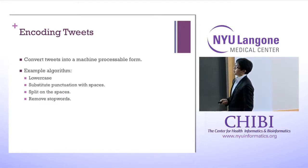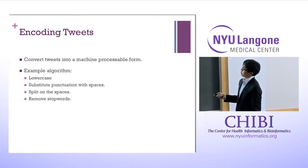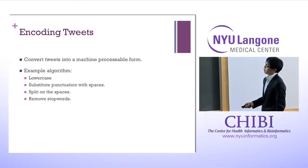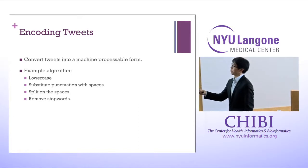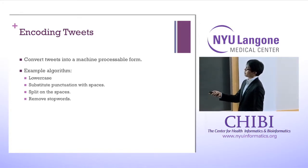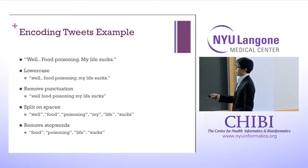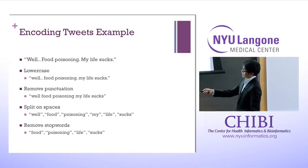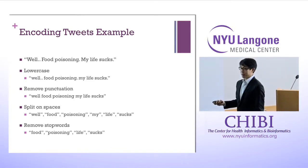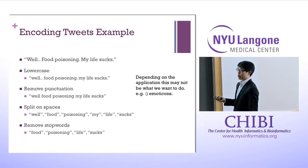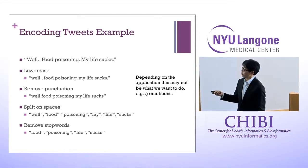Now we want to convert tweets into machine-processable form. The algorithm converts to lowercase, substitutes punctuation with spaces, splits on spaces, and removes stop words. For example, the tweet 'Well, food poisoning, my life sucks' gets converted to lowercase, punctuation removed, split on spaces, and after removing stop words like 'well' and 'my,' it reduces to four words. Note: if emoticons are important to your application, you may not want to remove all punctuation.